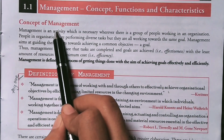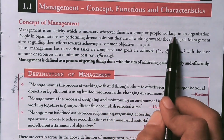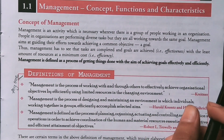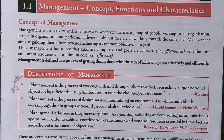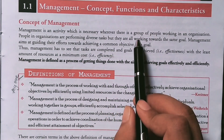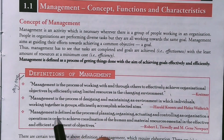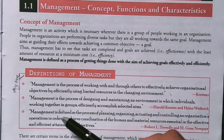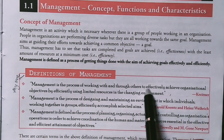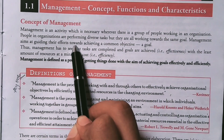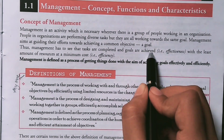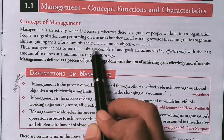The first concept of this chapter is management. Management is an activity which is necessary wherever there is a group of people working in an organization. When a group of people work in an organization, we need management — that means managing men tactfully so that your work and productivity is at the mark. People in the organization perform diverse tasks but they all work towards the same goal. Management aims at guiding their efforts towards achieving a common objective.